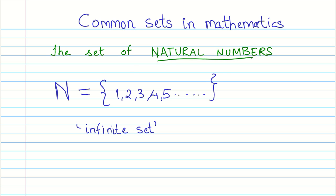We first start with the set of natural numbers. The natural numbers are the numbers that we start counting: 1, 2, 3, 4, 5, and so on. This is represented by the capital letter N. The set of natural numbers is an infinite set.